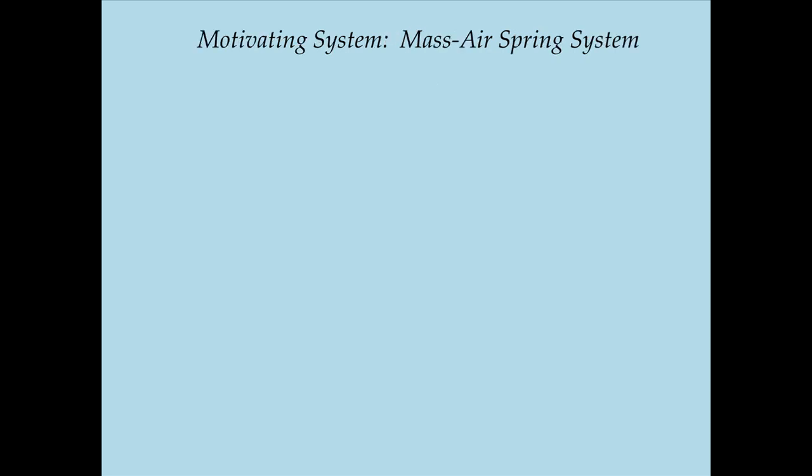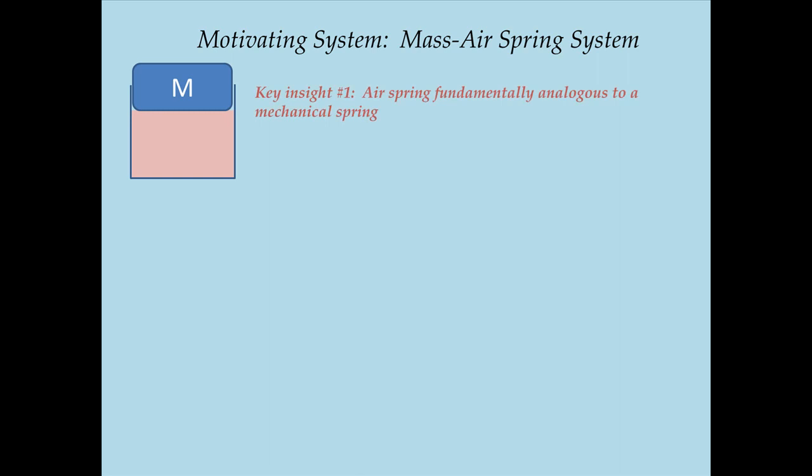Moving straight on to the system motivating this study — the system is essentially a mass on an air spring. What this could represent in real life is a city bus that has an air cushion-based suspension instead of a rigid mechanical or spring-based mechanical suspension. In other words, we have a translational mass sitting on a cushion filled with air. This air spring or air cushion is fundamentally analogous to a mechanical spring — it provides a reaction force related to how much it is compressed.